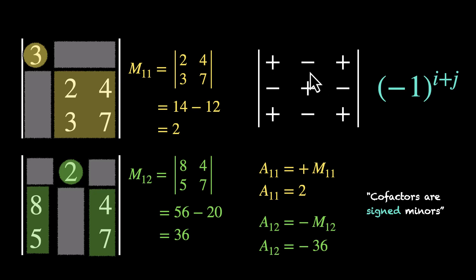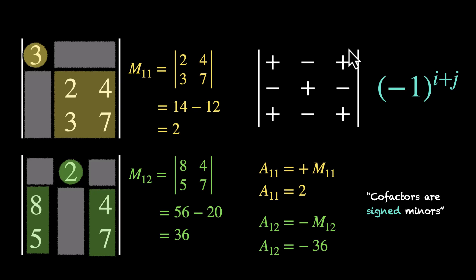For A12, i is 1 and j is 2, so 1 plus 2 is 3, which is odd, meaning it stays negative. For the element at position 1, 3: add 1 plus 3 to get 4, which is positive, and so on.